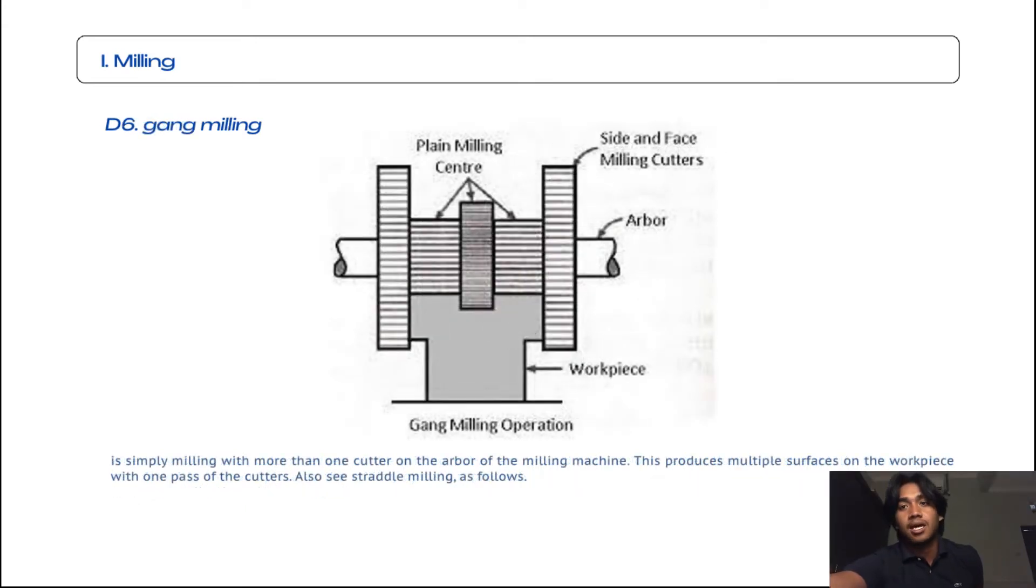The sixth subtopic for milling is gang milling. Gang milling is simply milling with more than one cutter on the arbor of the milling machine. This produces multiple surfaces on the workpiece with one pass of the cutters.